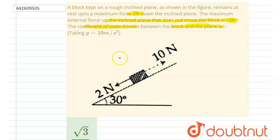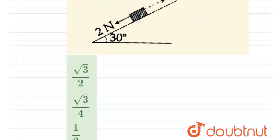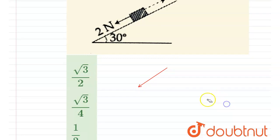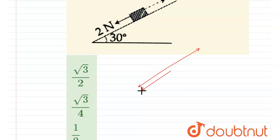If we apply 2 newton down the plane, the block doesn't move, and this is the maximum force we can apply down the plane. So if I draw the FBD for the first case, this will be the 2 newton acting down the plane, friction force acting up the plane, and mg sin θ acting down the plane.